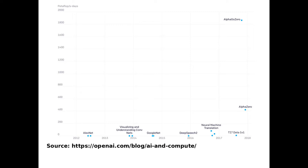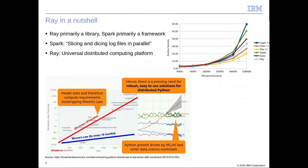Let's look at the resource consumption of AlphaGo Zero. On the x-axis you see time and on the y-axis you see consumption of resources — you can clearly see that AlphaGo Zero uses a lot of resources. AlphaGo Zero was using state-of-the-art deep learning technology but excelled at distributed computing. This is why I want to show you Ray, which is a perfection of distributed computing.